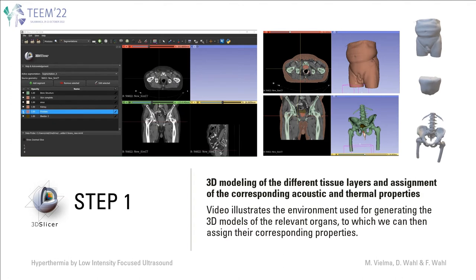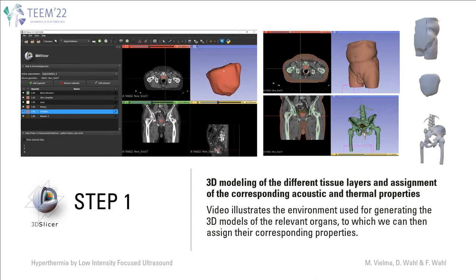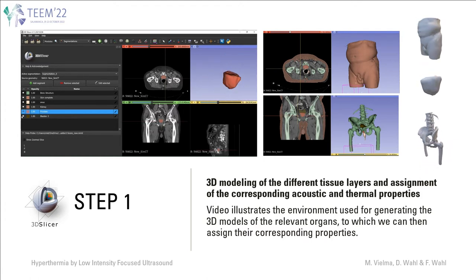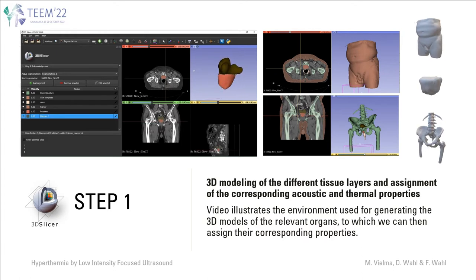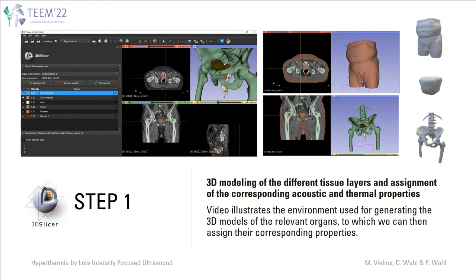Step 1 is about generating the 3D models of the relevant organs. The video shown here illustrates the segmentations performed to generate the models of the prostate and neighboring tissues. For this, we have used the 3D Slicer image computing platform, a free, open source, and multi-platform software package widely used for medical, biomedical, and related imaging. The images we segmented were obtained from a database publicly available in the Cancer Imaging Archive.